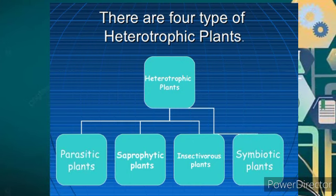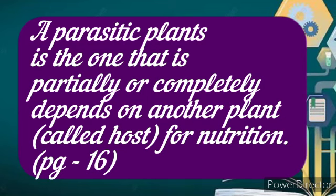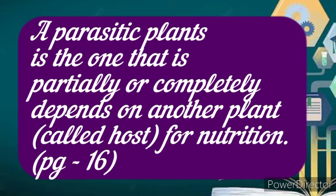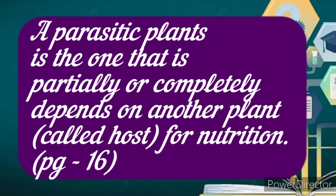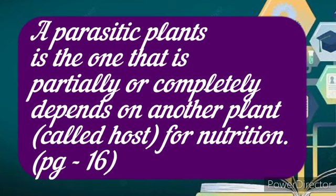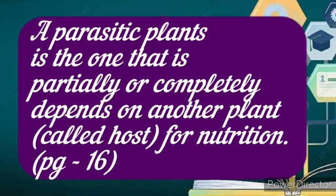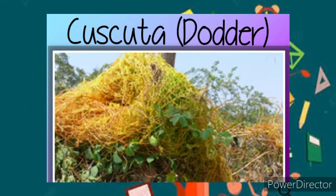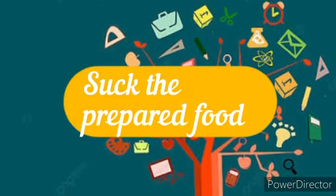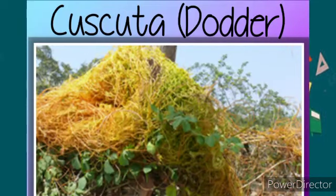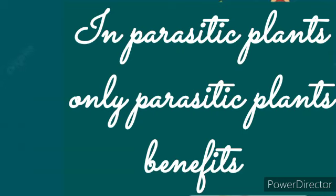A parasitic plant is one that is partially or completely dependent on another plant for nutrition. Parasitic plants usually develop special roots that penetrate into the tissue of the host plant and suck the prepared food. Some examples are cuscuta and mistletoe. In a parasitic relationship, only the parasitic plant benefits.